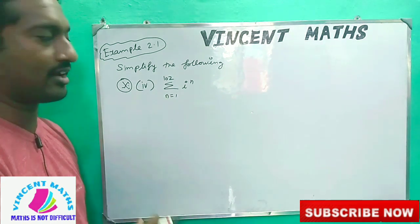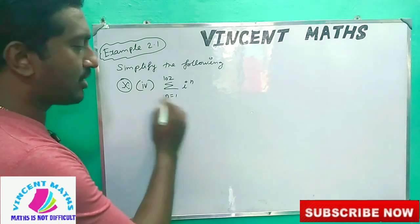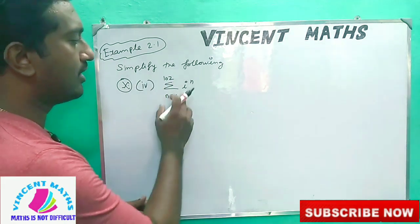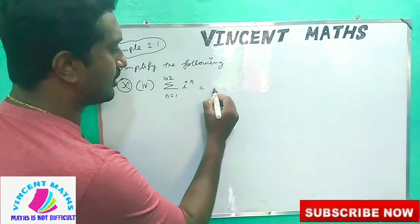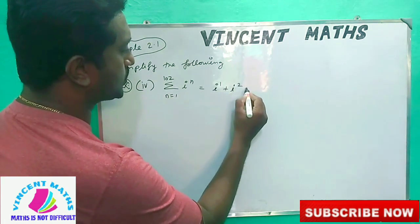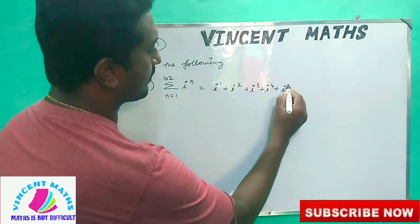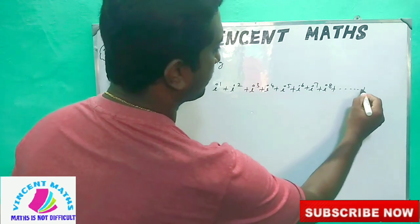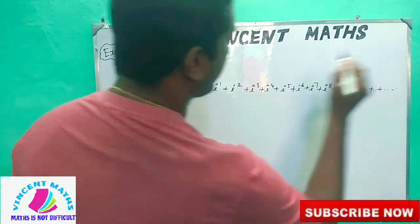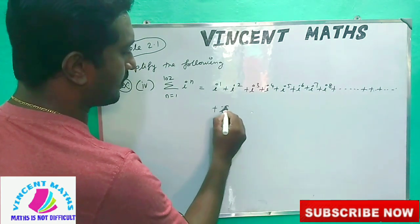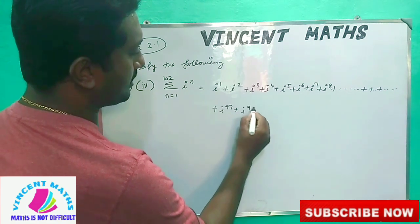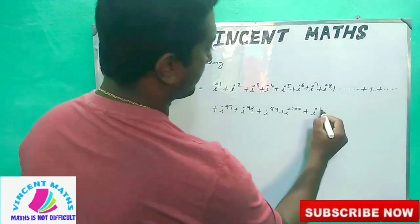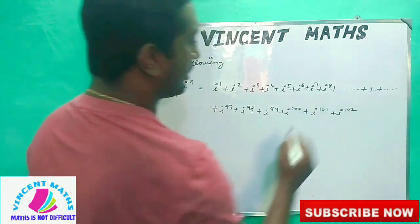Last year exam question: find the sum where n equals 1 — i power n, that is i power 1 plus i power 2 plus i power 3, i power 4, i power 5, i power 6, i power 7, i power 8 — continue. Up to i power 97, i power 98, i power 99, i power 100, i power 101, i power 102.